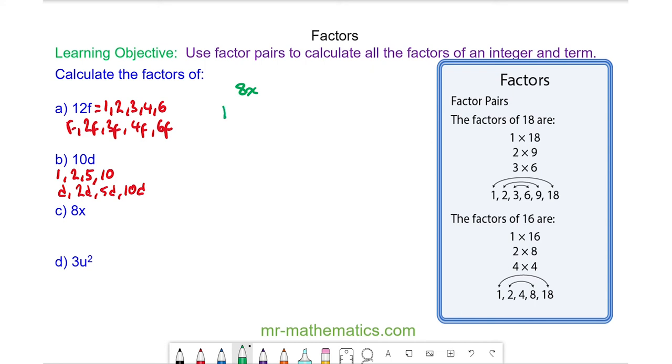So for 8x we have 1 and 8x, or x and 8, 2 and 4x, or 2x and 4. And we know there are no more factors between 2 and 4. So these are your factors of 8x.